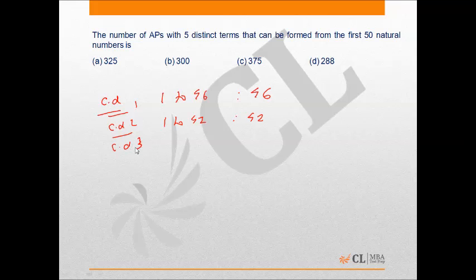If common difference is 3 similarly, the first term could be anything from 1 to 38 because then the terms would be 38, 41, 44, 47 and 50. That's 38 possibilities.